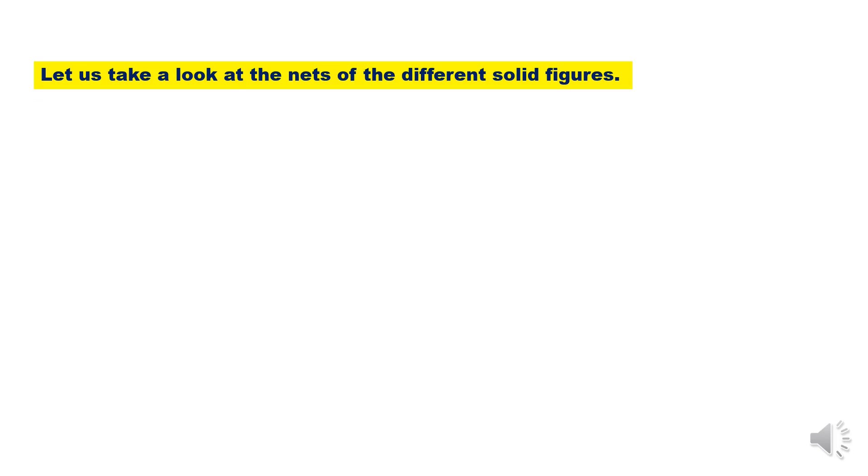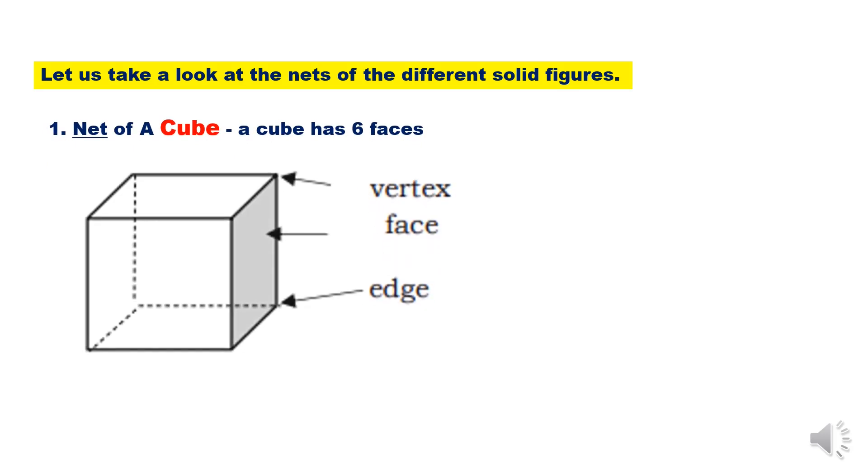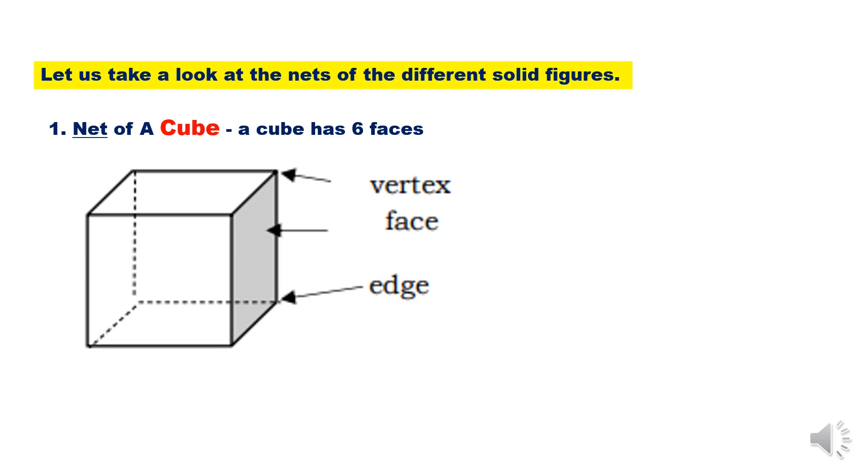Let us take a look at the nets of the different solid figures. Net of a cube: a cube has six faces. That is the net. There are six squares.